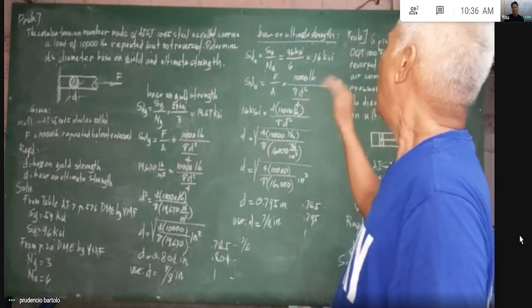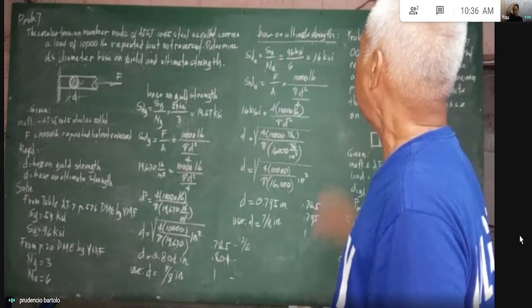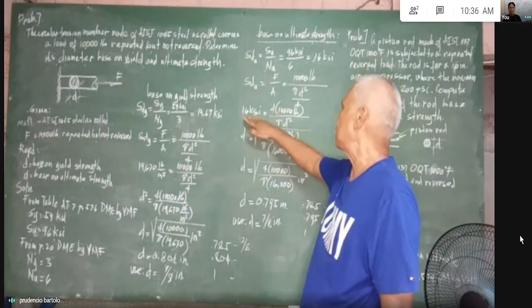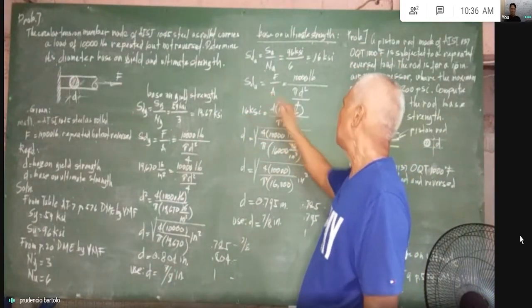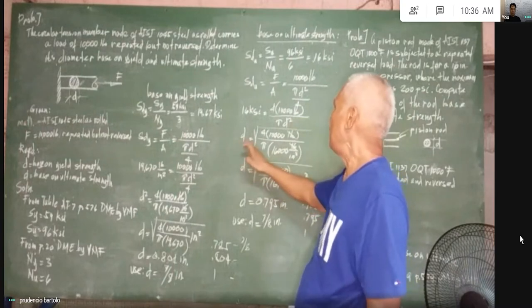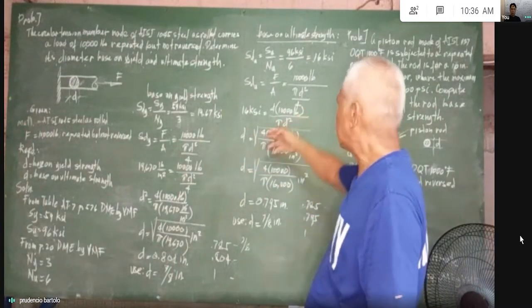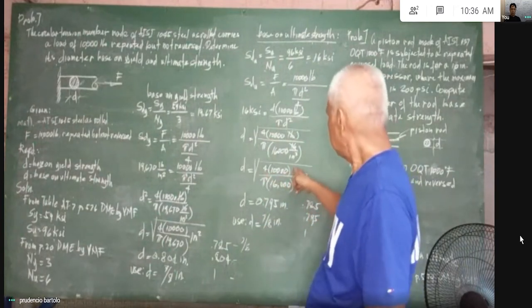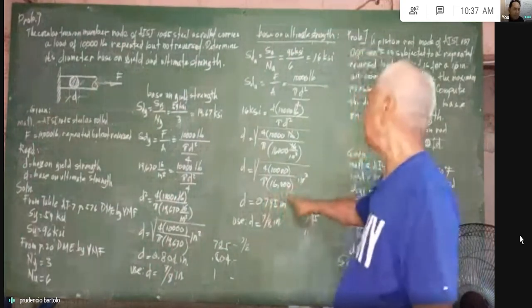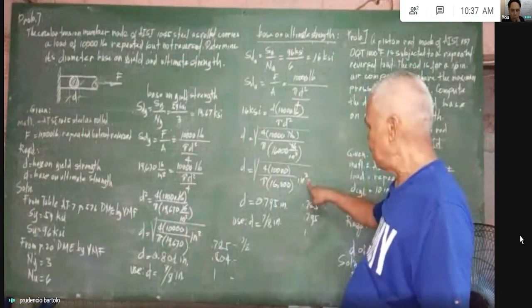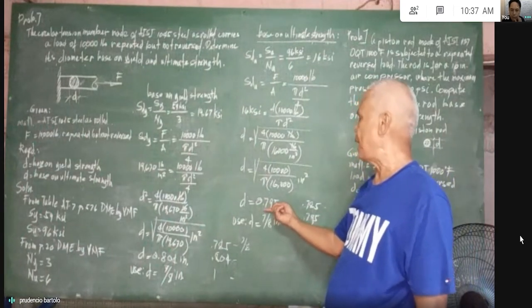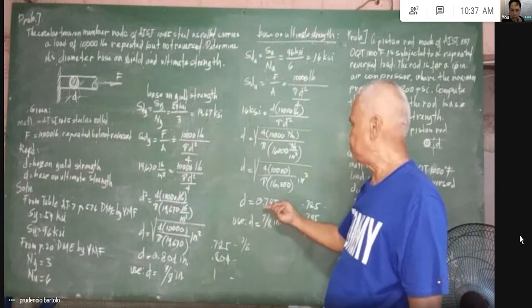From the design equation based on ultimate, that equals F over A. Substituting our values, we have 16 KSI equal to 4 times 10,000 pounds all over pi D-squared. Solving for D, that yields 0.795 of an inch.